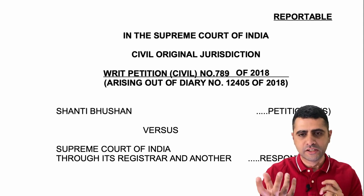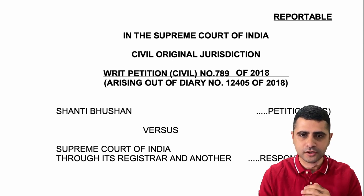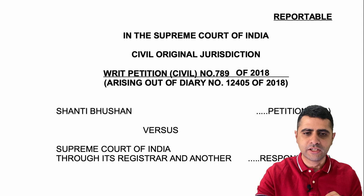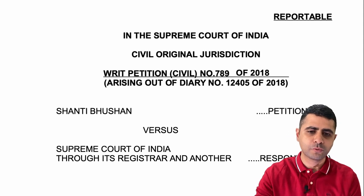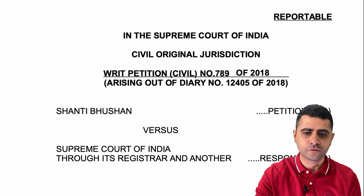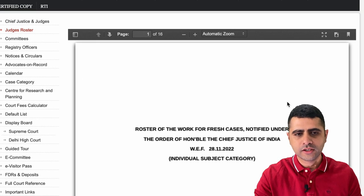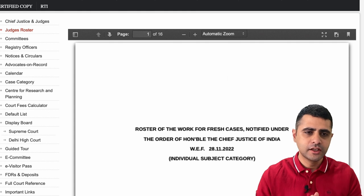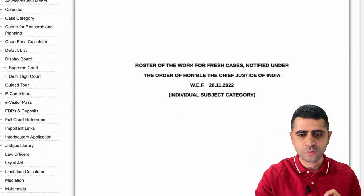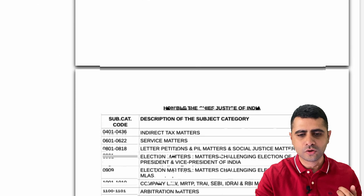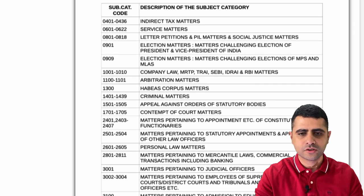This concept of Master of the Roster has been established and reinforced time and again by many Supreme Court judgments, one of the latest being Shanti Bhushan versus the Supreme Court of India, Writ Petition 789 of 2018. When you visit the Supreme Court's own website, there is a tab which talks about the judges' roster, which leads to a page where you can see a PDF file clearly spelling out the different subcategory codes and the different types of matters each judge is going to handle.